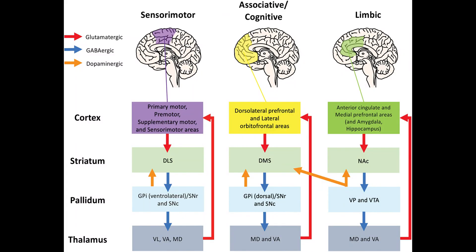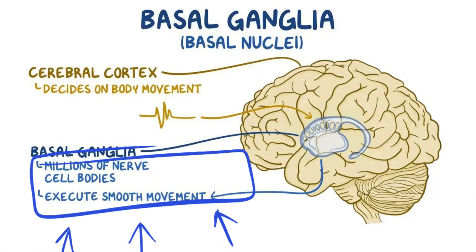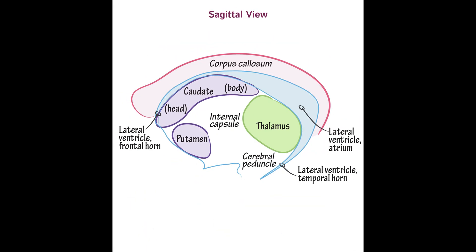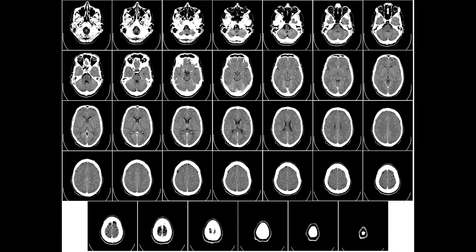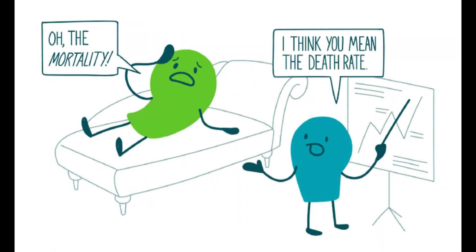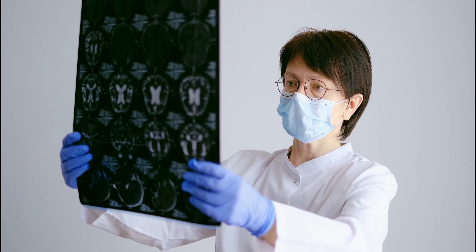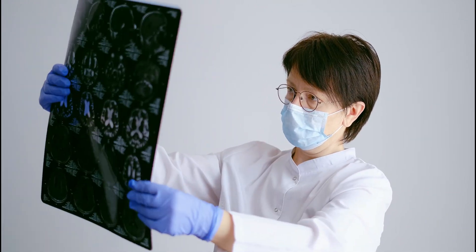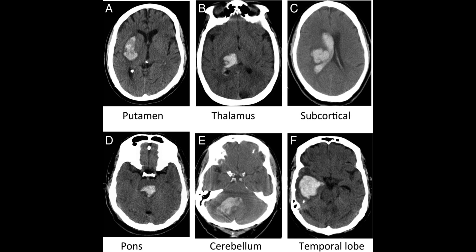Basal ganglia are very important anatomical structures that are associated with many functions, but their major role is to facilitate movement. In this video we are only discussing the anatomy. This was all about how you can identify the Deep Brain Nuclei on a CT scan, as it is the most common site of supratentorial hemorrhage and is associated with a 50% mortality rate. Being a medical student, junior doctor, intern, or resident, you should know that this is the typical location of hemorrhage in a hypertensive patient.